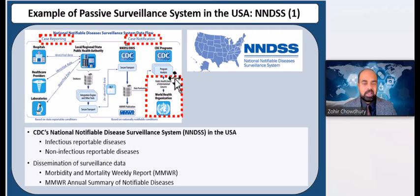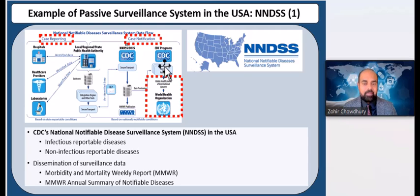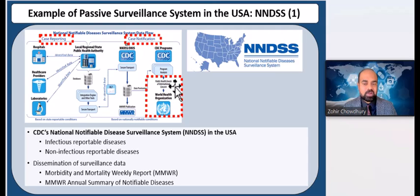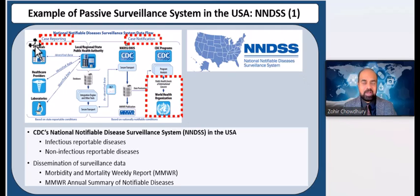The national level then processes and analyzes the data, which is communicated back to states or the public in specific weekly or annual summaries. Diseases of public health events of international concern are also reported to the WHO for additional global reporting. This entire system is passive because the data is passively gathered.